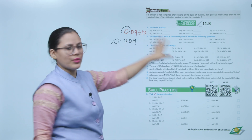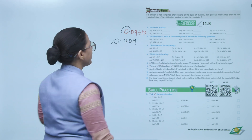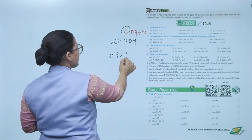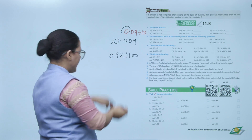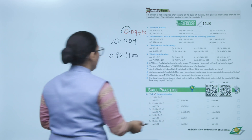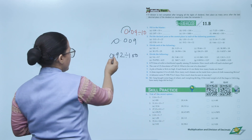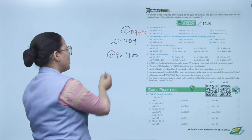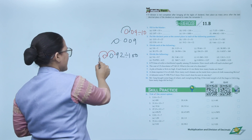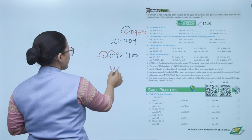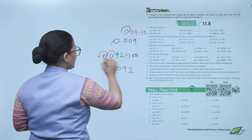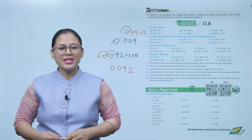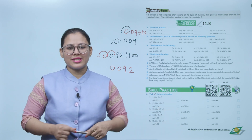Exercise: fill in the blanks. For dividing by 10 — one zero in 10 — decimal shifts one place to the left, giving 0.09. For part B: 0.92 divided by 100 — decimal shifts two places to the left — answer is 0.0092. Students, now practice the exercise on your own.